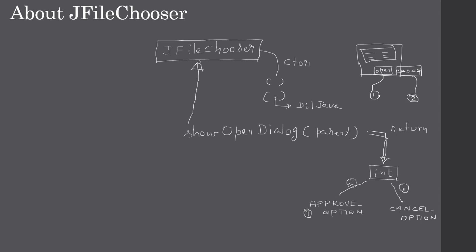When the user double-clicks a file name or clicks the Open button, the return value will be approveOption. We can compare the return value against approveOption and cancelOption to know which button the user clicked — whether they opened or cancelled.